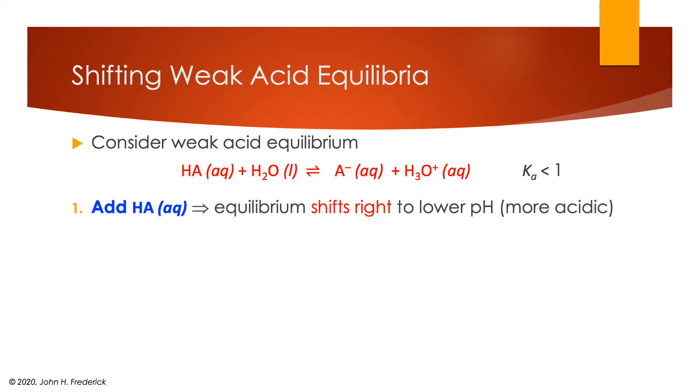Well, we could add more weak acid. And what will happen to this? According to Le Chatelier's principle, it'll resist the change, so equilibrium will shift to the right, and that will cause the pH to lower, so it will become more acidic.